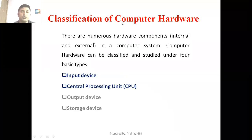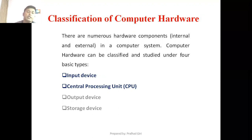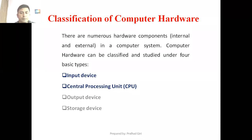Hello students, last week we discussed about computer hardware — the definition of computer hardware and different four types of hardware. Now let us go to the classification of computer hardware today. There are numerous hardware components, internal as well as external, inside the computer system. Computer hardware can be classified under four basic types: input device, central processing unit, output device, and storage device.